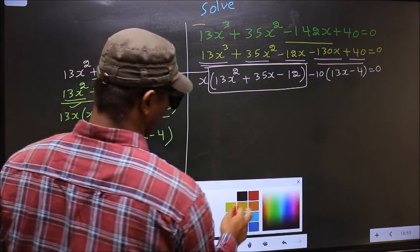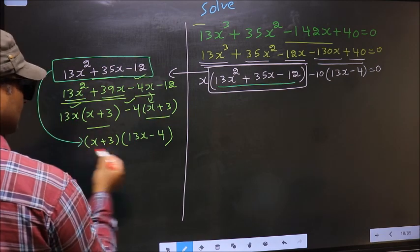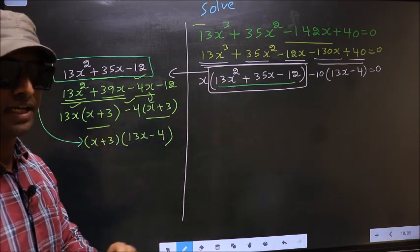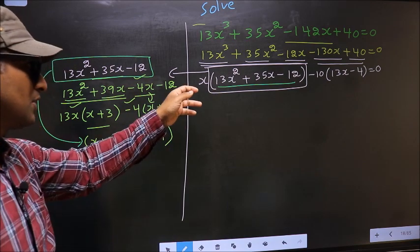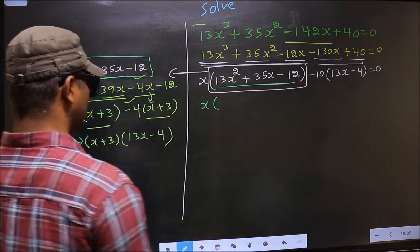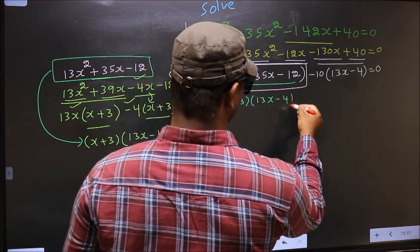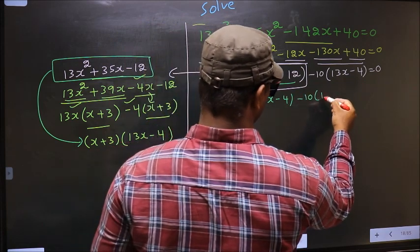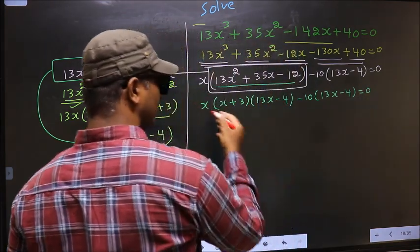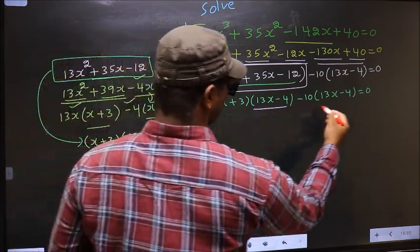In place of this quadratic, we should write (x + 3)(13x - 4). So this equation will change to: x(x + 3)(13x - 4) — over here no change — = 0. From this entire equation, what can be taken out common is (13x - 4).